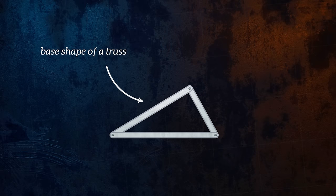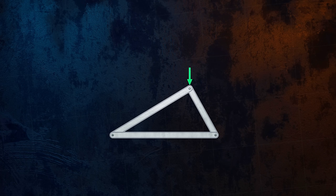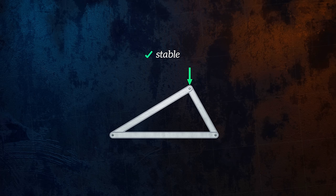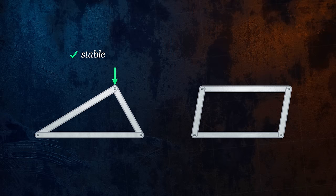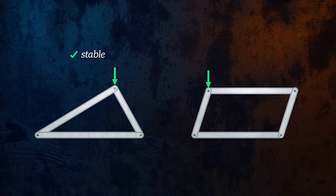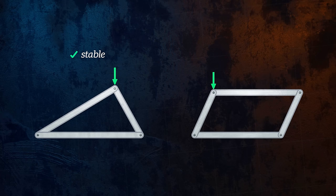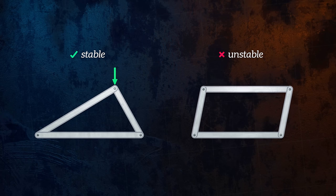The base shape of a truss is three members connected to form a triangle. If a load is applied, the angles of the triangle won't be able to change if the length of each of the members stays the same. This means that the triangle is a very stable shape which won't deform when loads are applied to it, and so it is a great base from which to build a larger structure. Joining four members together does not form a stable structure. The angles between members can change without any change in the length of the members, and so using a four-sided shape as the base for building a truss would be a terrible choice.